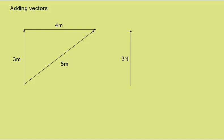Equally, if we had a 3N force in this direction, and a 4N force in this direction, that would be the equivalent of having a 5N force in this direction. If we simply slide the 4N force up to here, we have effectively the same diagram as on the left, and this shows us how we can add vectors.